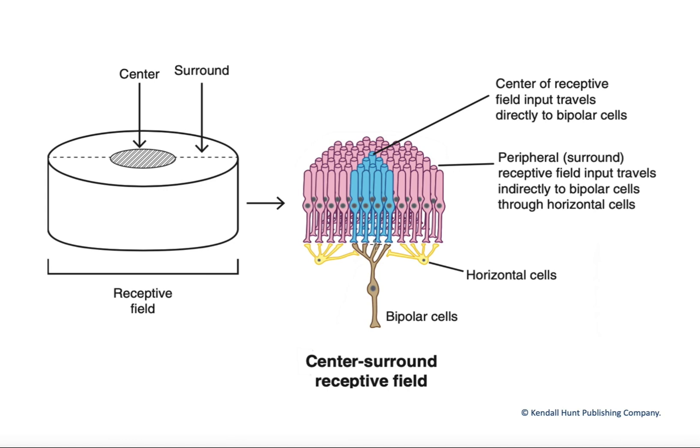Because we have this large array of rods that synapse and send their information to, in this case, a single bipolar cell.